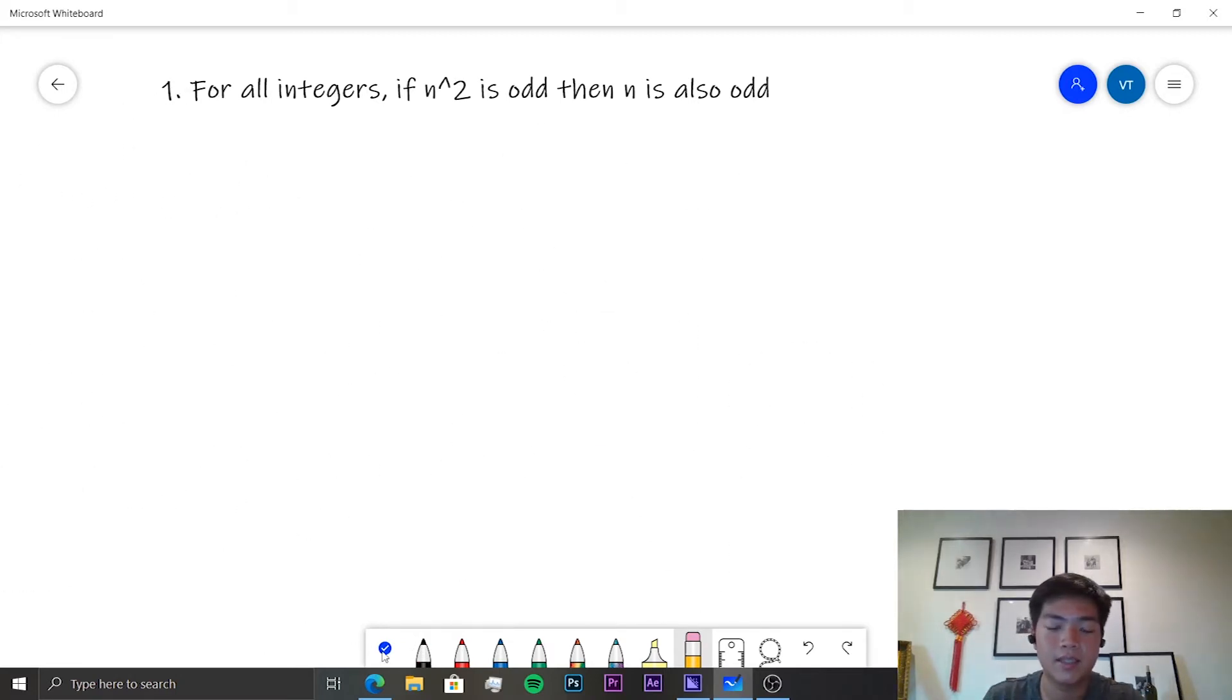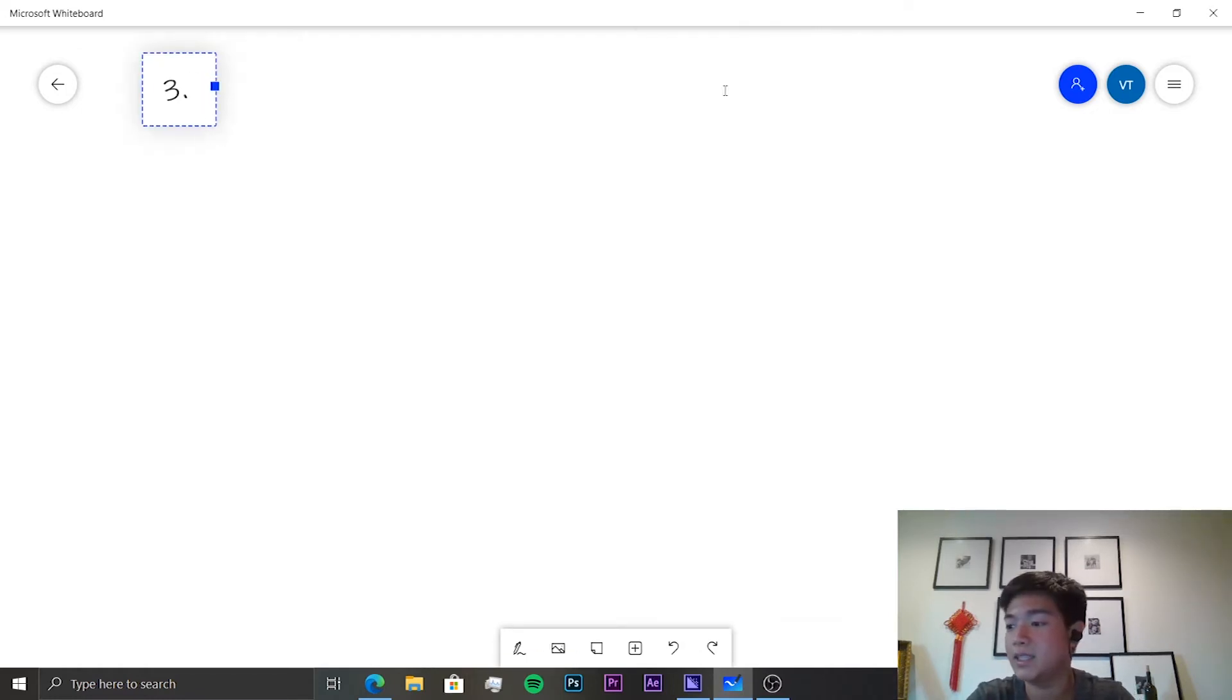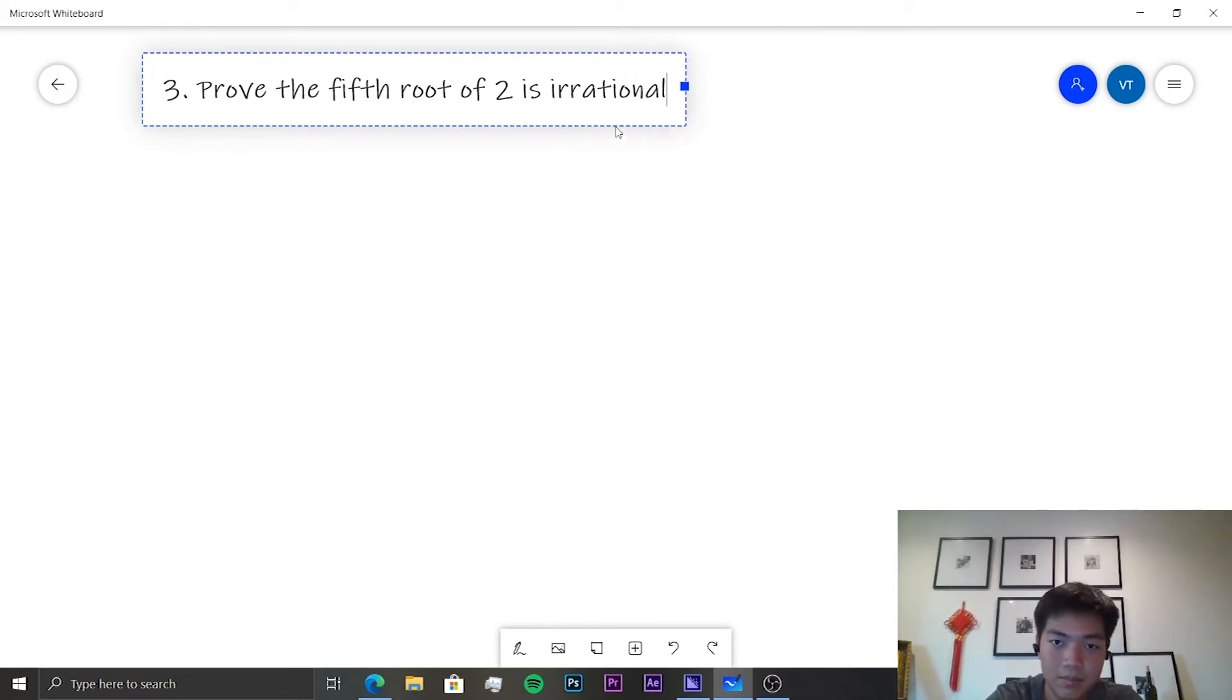Okay, let's move on to the next one. Next question is, prove the fifth root of 2 is irrational. A lot of irrationality proofs rely on proof by contradiction.